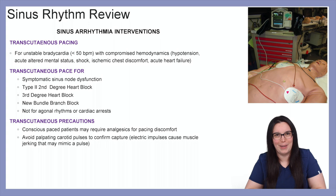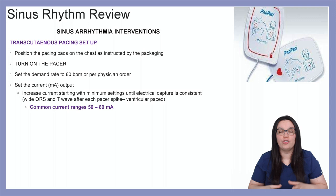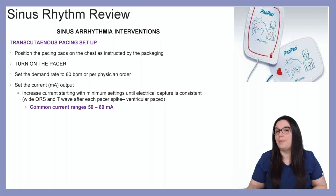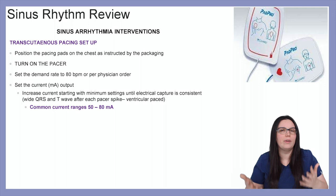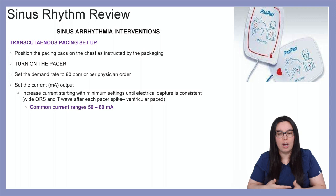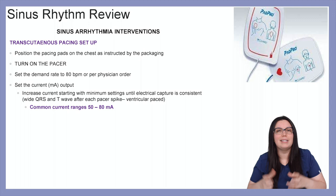To set up transcutaneous pacing, position the pacing pads on the patient as instructed by the packaging — normally one pad goes over the right anterior chest wall and the left pad goes on the left midaxillary line next to the heart. Turn on the pacer first, and set the demand rate to 80 beats per minute or whatever the physician instructs. Set and increase the current mA output starting with a minimum setting, moving up until electrical capture is consistent — which would be a wide QRS and a T wave after each pacer spike. Common current range is between 50 to 80 mAs.